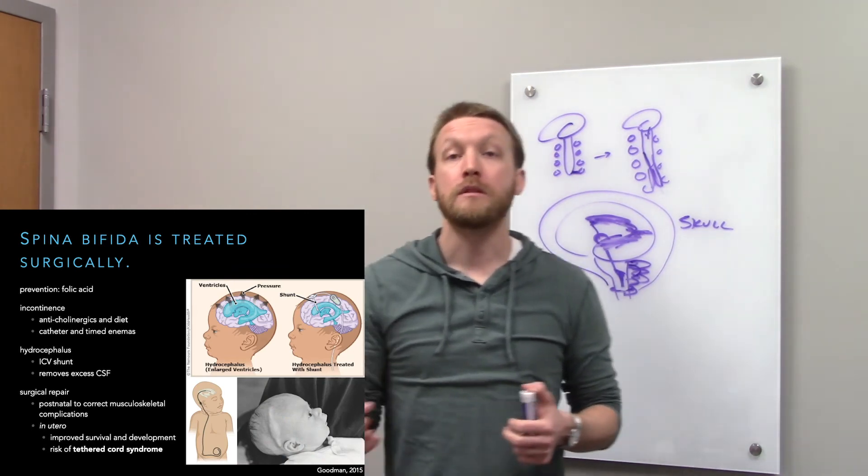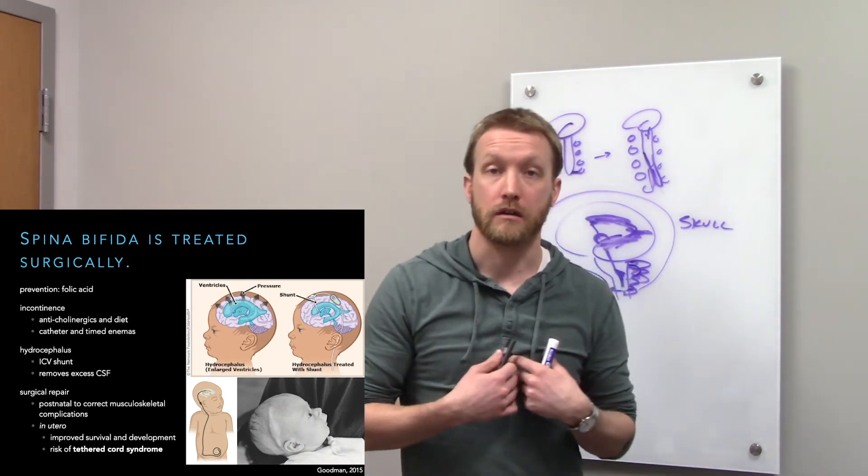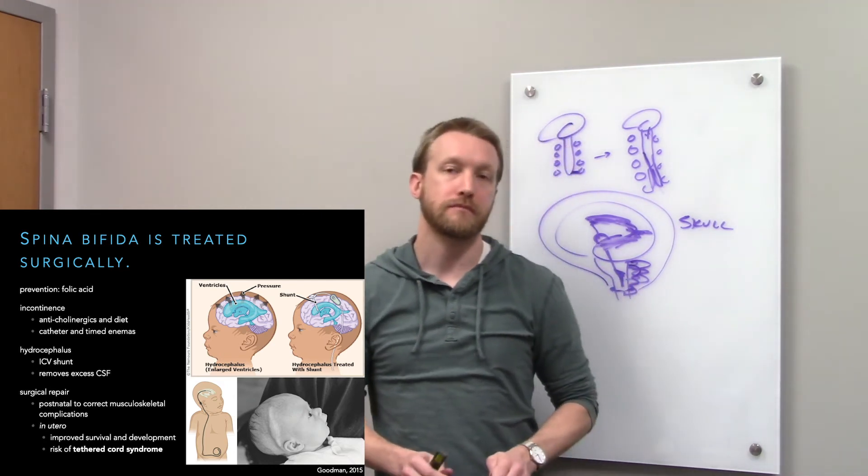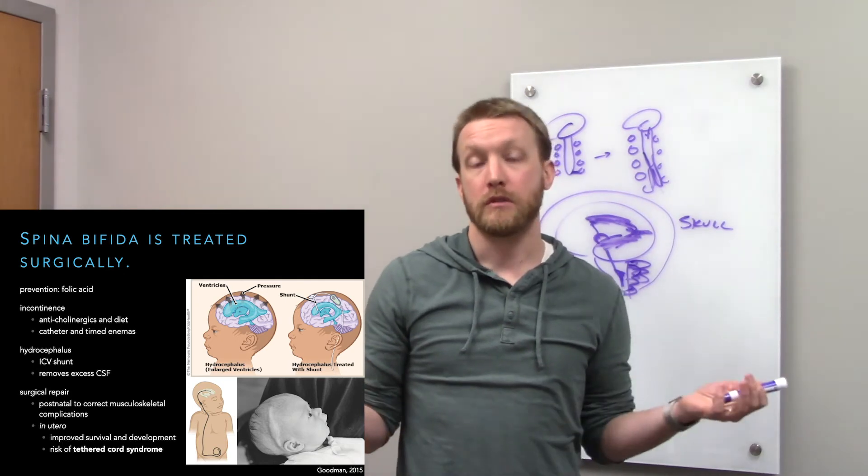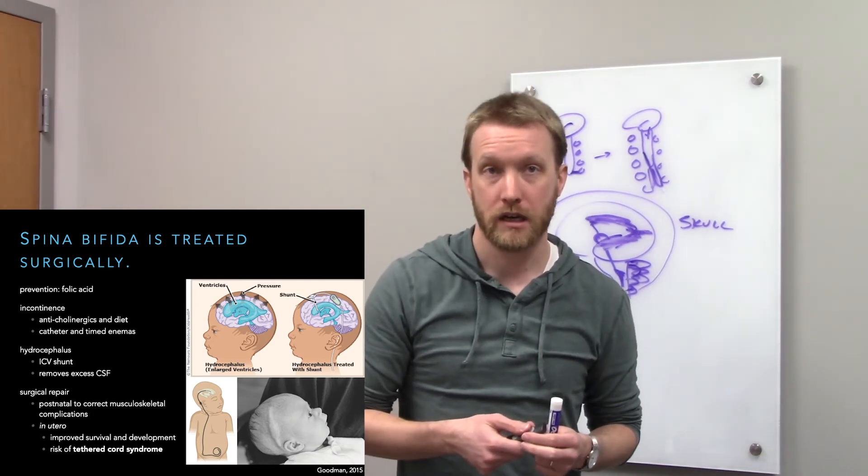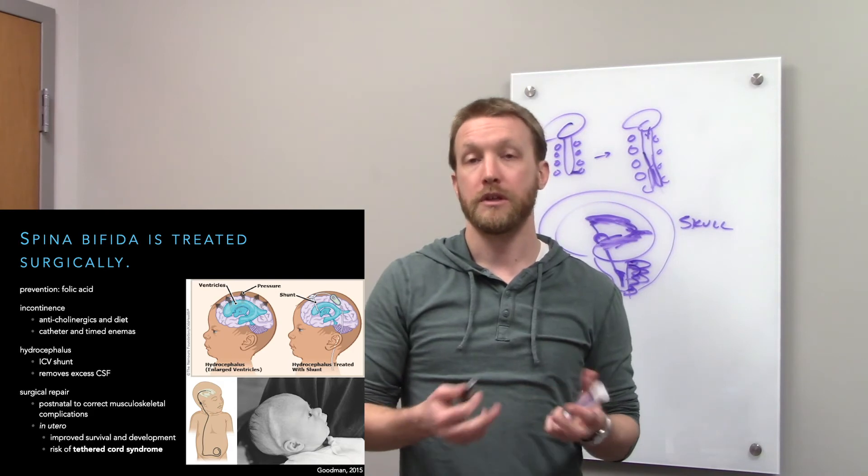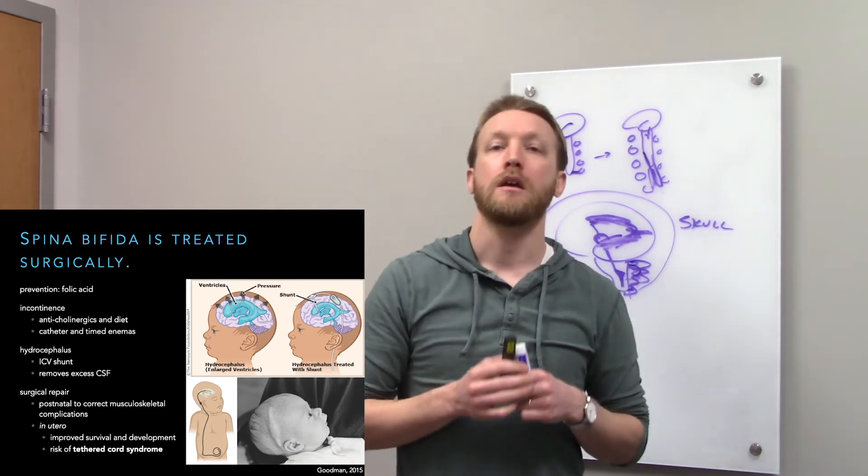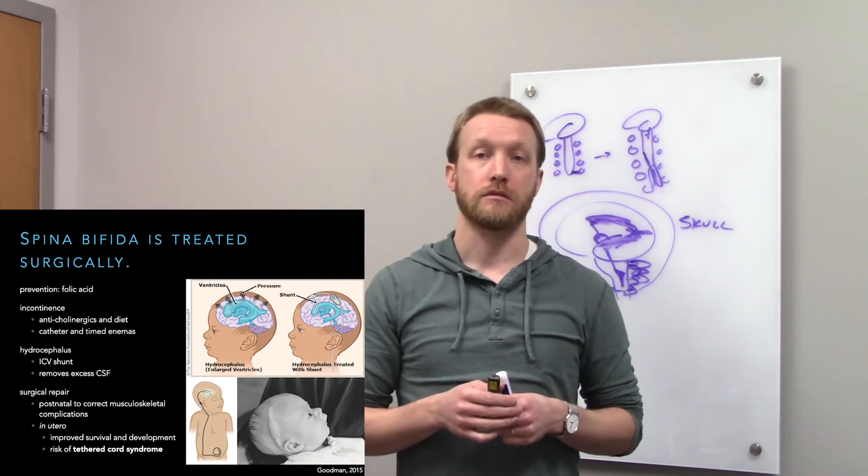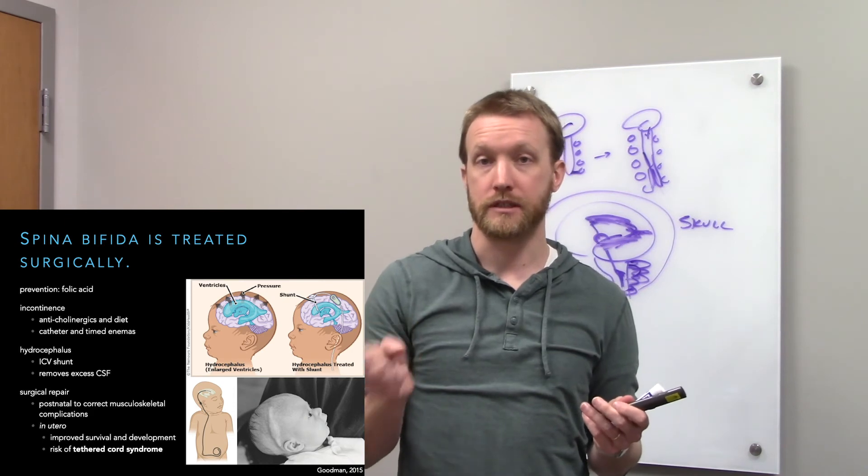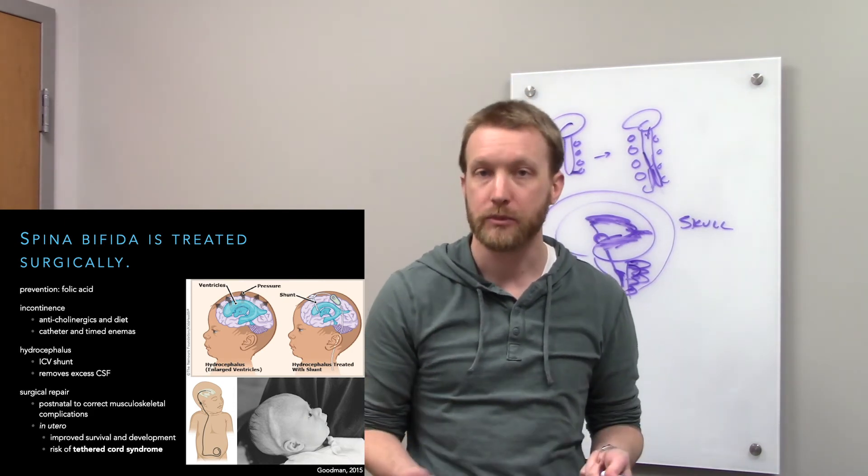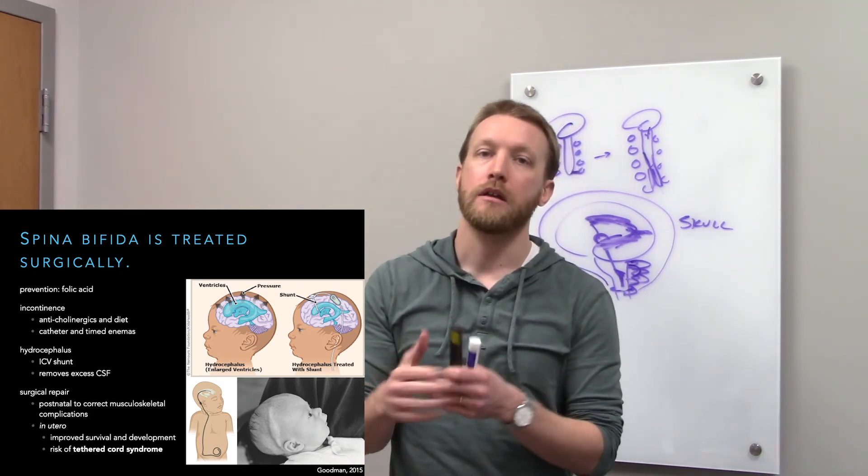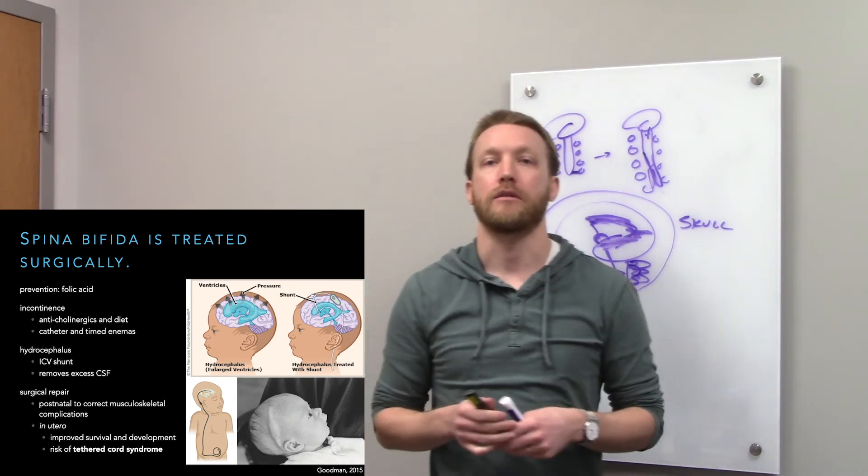So what do we do about spina bifida? Well, hopefully we prevent it. Hopefully we take our vitamins, have good luck. By vitamins I mean folic acid in this case. But once it occurs, how do we treat it? It depends on what symptoms we're talking about. If we're talking about incontinence, we can treat that depending on what type of incontinence it is. For example, if we have an overactive bladder, which is more likely, then we use anticholinergics. Because remember, the parasympathetic nervous system uses acetylcholine. So if we antagonize acetylcholine receptors, that hyperactive cholinergic input can get turned down a bit and normal bladder function can resume.